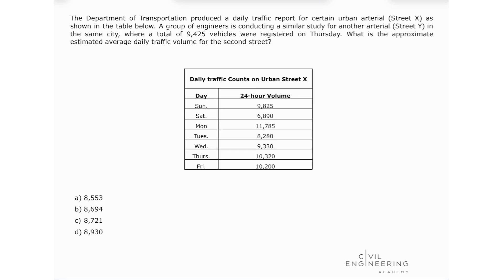The problem states like this. The Department of Transportation produced a daily traffic report for certain urban arterial street X as shown in the table below. A group of engineers is conducting a similar study for another arterial street Y in the same city, where a total of 9,425 vehicles were registered on Thursday. What is the approximate estimated average daily traffic volume for the second street?